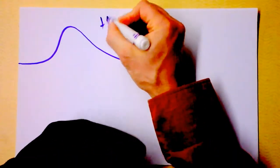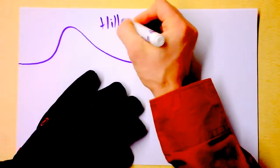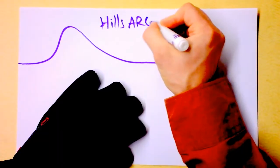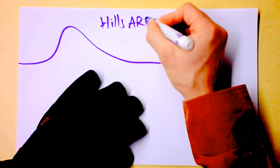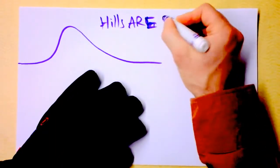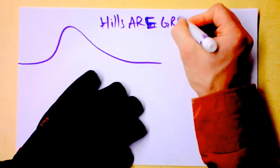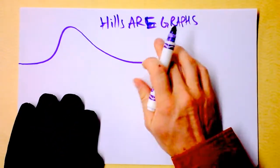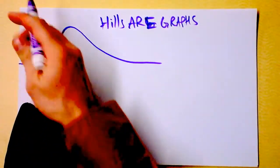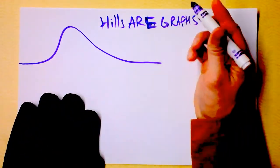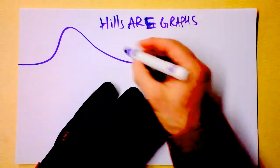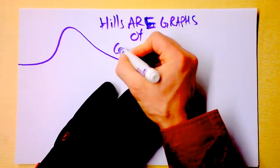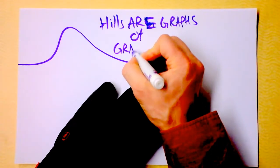Hills are actually graphs, because you could take a photograph of them — y versus x. But hills are graphs of gravitational potential.